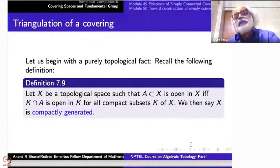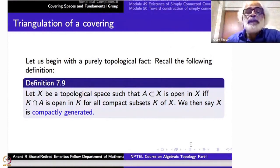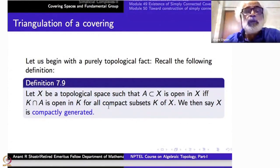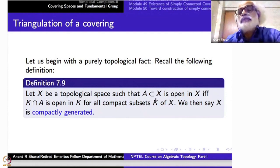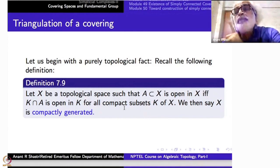For that I need another topological concept. Recall that a space is called compactly generated if a set is open when its intersection with every compact set is open inside that compact set. So the compact sets of a topological space determine all other open sets — as well as closed sets. Simplicial complexes with the weak topology are compactly generated.